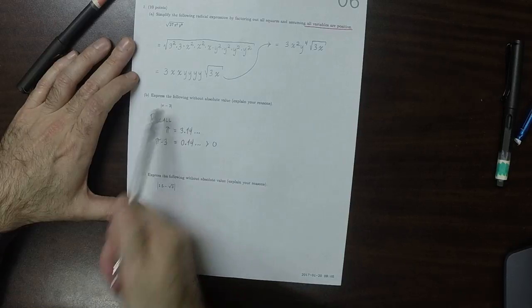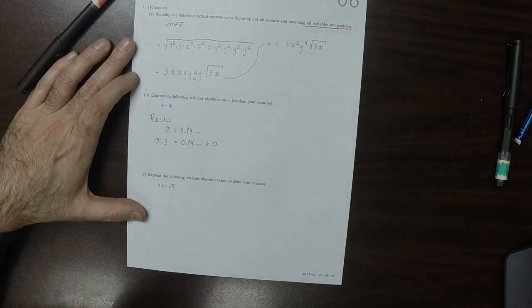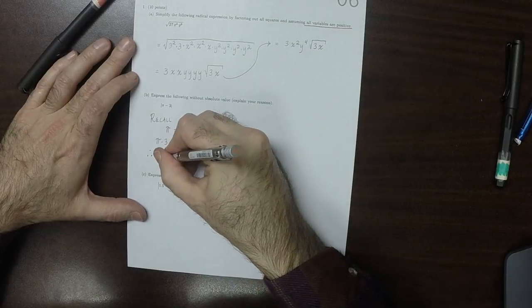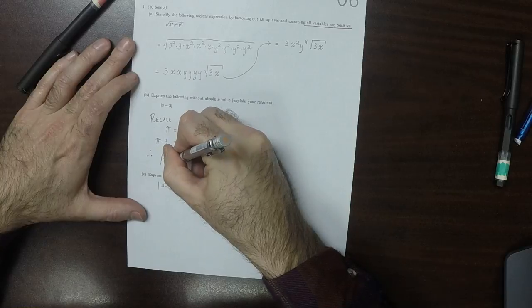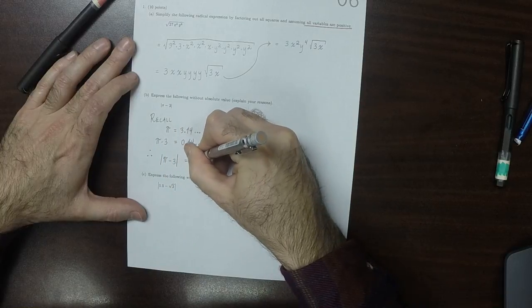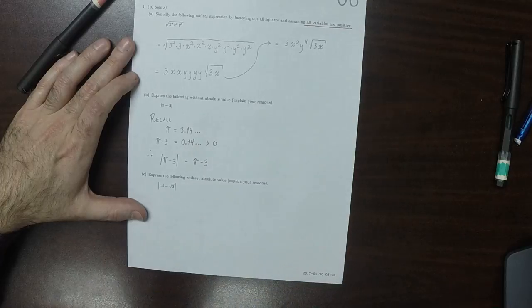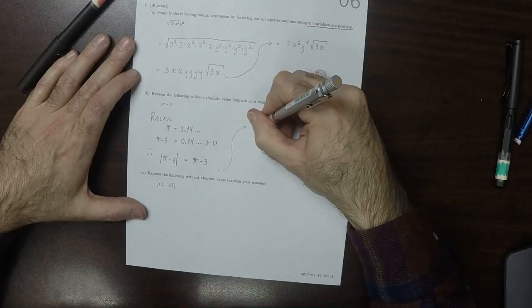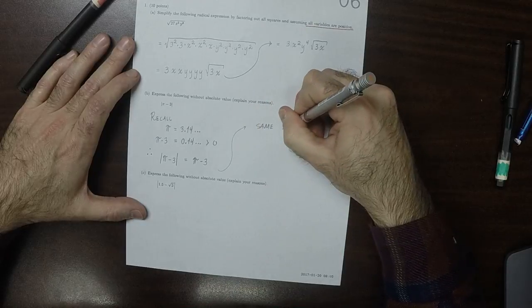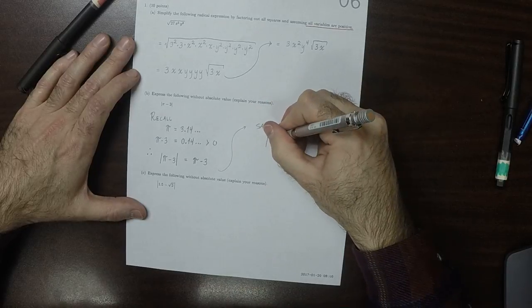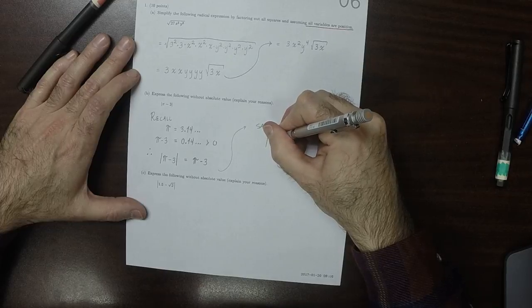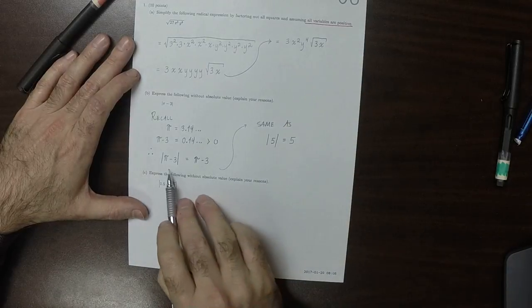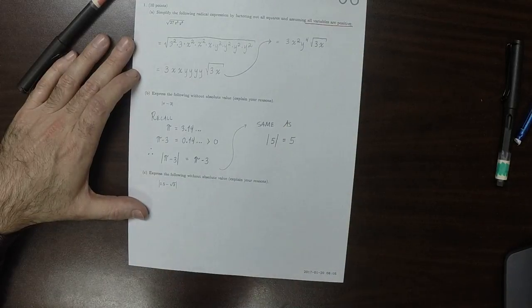So the argument to the absolute value is positive. And therefore, as a result, the absolute value of pi minus 3 is just pi minus 3 itself. In the same way as, for example, the absolute value of 5 is 5. Because 5 is positive. That number is positive, so its absolute value is itself.